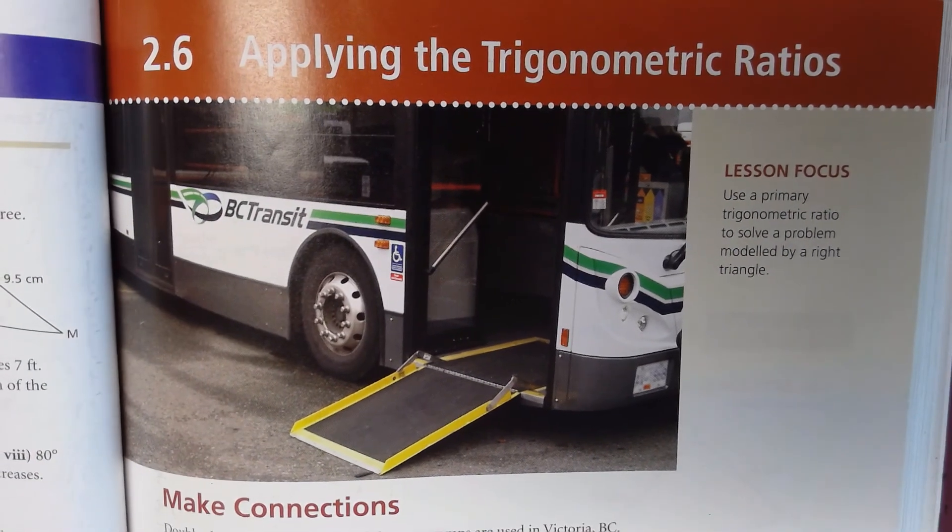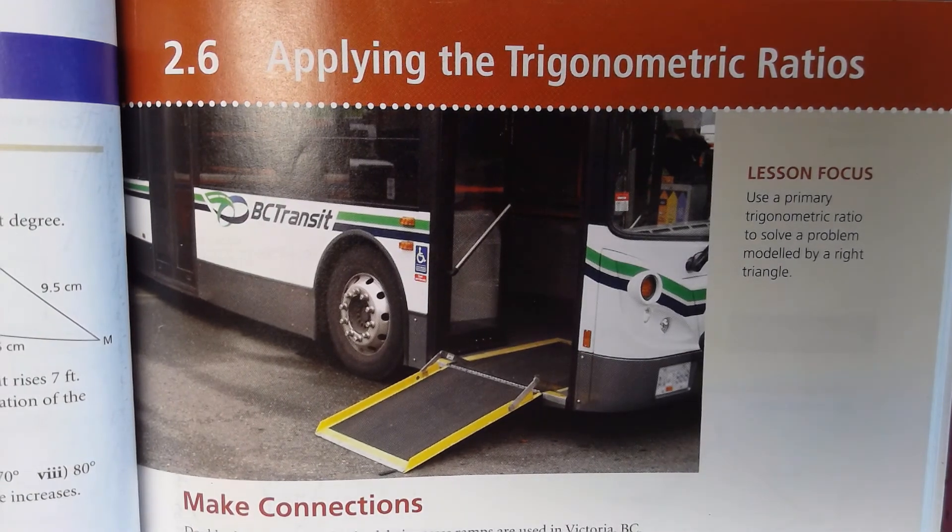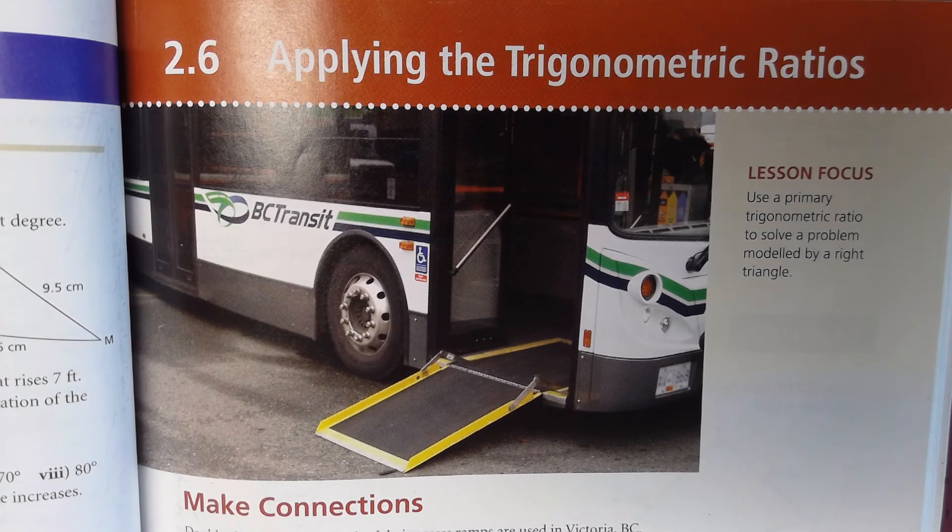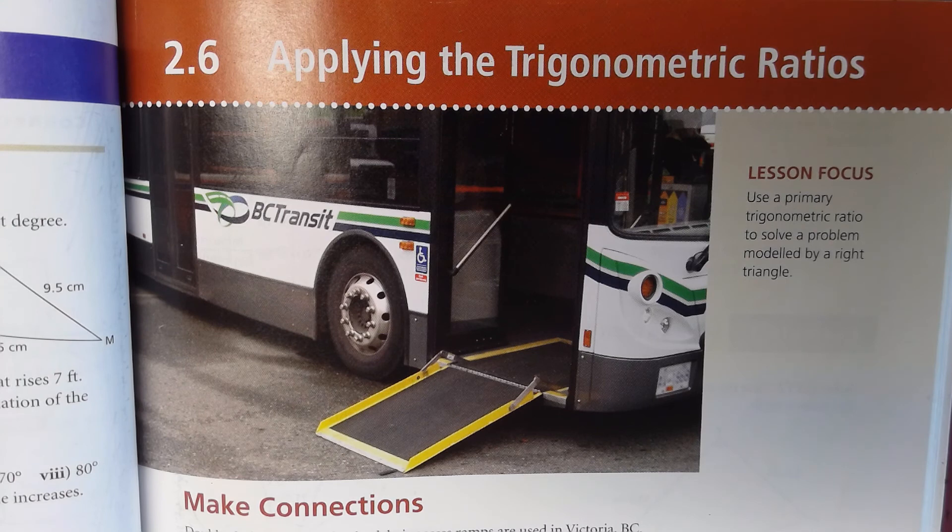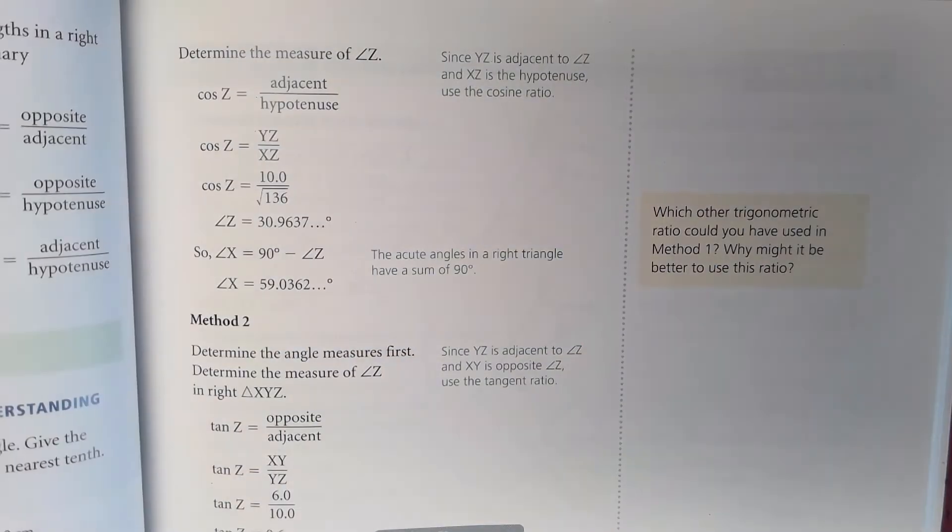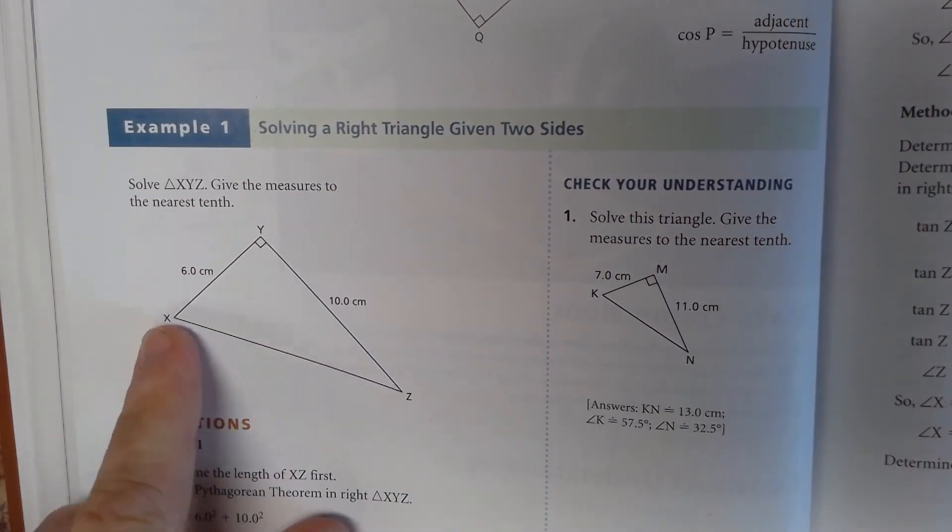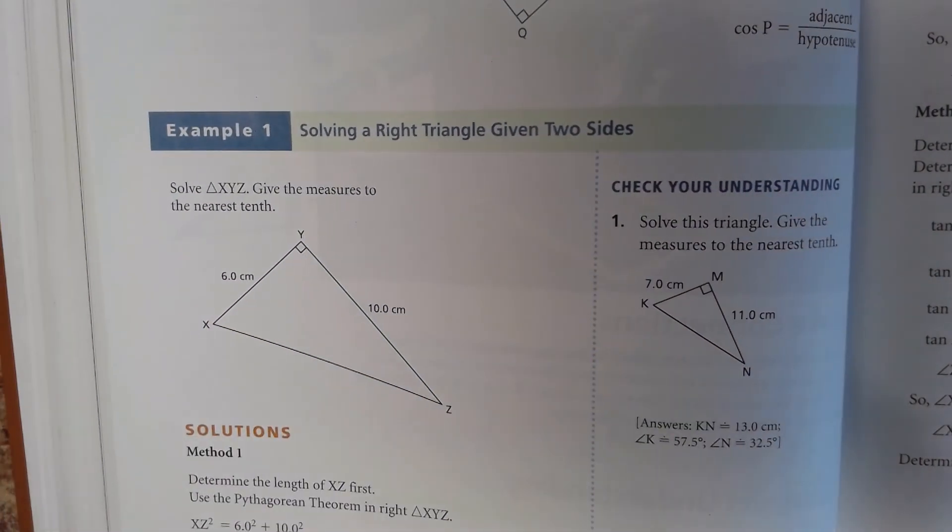In addition to the review, we're also going to do a lesson that begins on page 105, applying the trigonometric ratios. So now we combine all three of the ratios. We'll begin with an example that you'll find on page 106. Let me just sketch the triangle and we'll do all the work on lined paper.